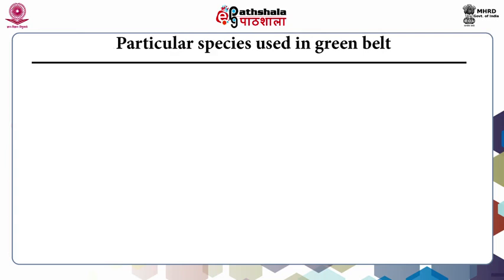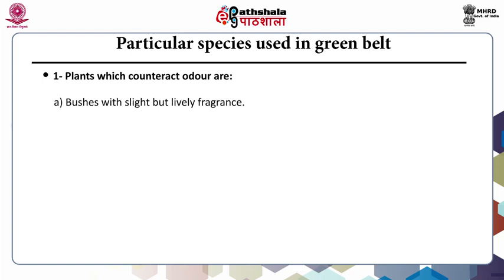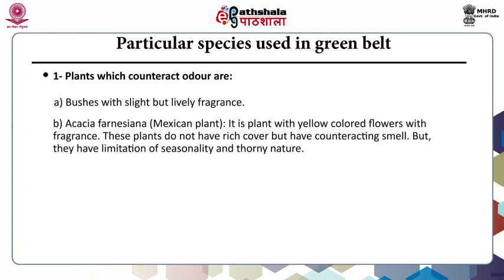Coming to the species particularly used in greenbelt development, the first category is plants which counteract odor. These are bushes with mild but active fragrance. Acacia farnesiana, that is the Mexican plant, is a type of bush with yellow colored fragrant flowers. It doesn't have a rich canopy but it is very effective for counteracting the smell. Its only limitation is its seasonality and thorny nature.